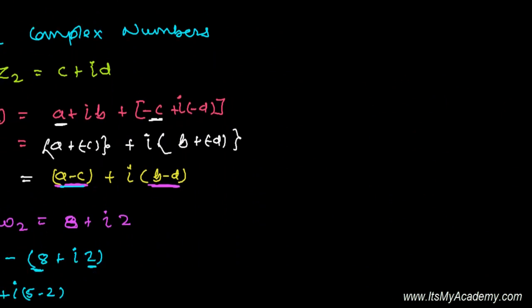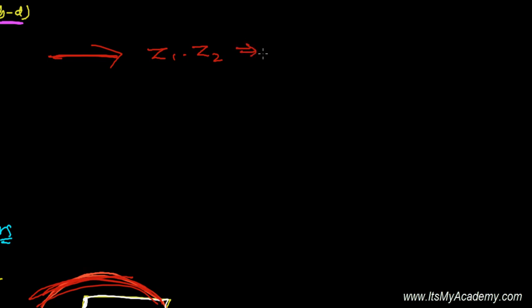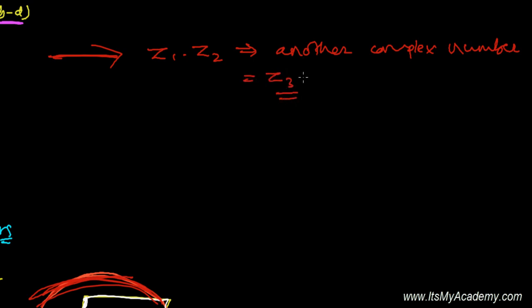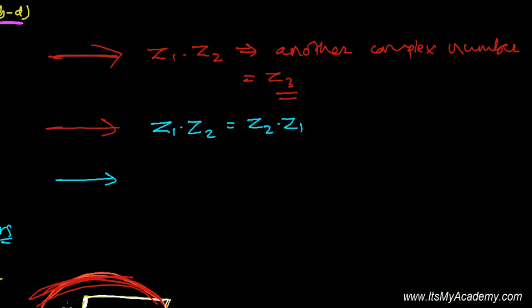There are a few important properties of the product of complex numbers. First, multiplying two complex numbers always results in another complex number. Second, the product of two complex numbers follows the commutative law, meaning Z1 times Z2 equals Z2 times Z1.